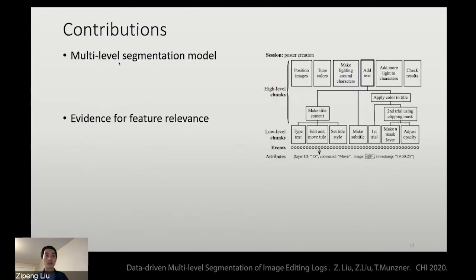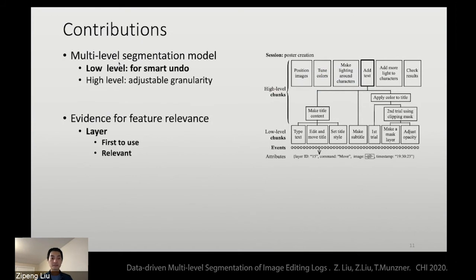In this paper, we contribute a multi-level segmentation model where the low-level model is targeting smart undo, and the high level is quite flexible in terms of the granularity. We also provide some evidence for feature relevance. We are the first to use layer for segmentation, and we find that layer is super relevant. We also find command and duration are relevant, aligned with previous work, but image content has no effect on the segmentation problem, in contrary to previous work.